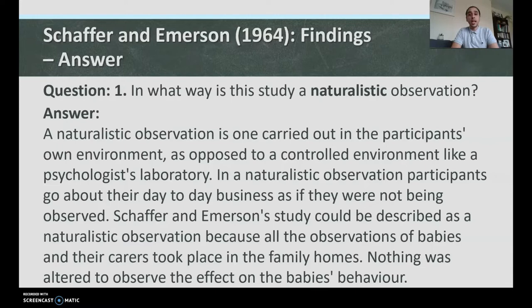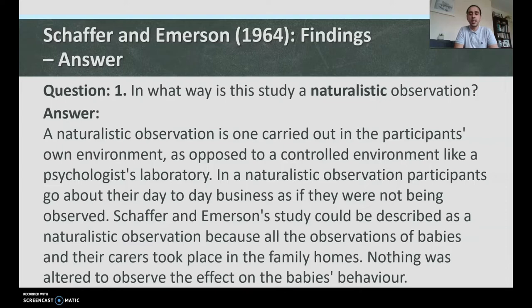It occurred in the natural setting where the behavior usually happens. If I wanted to observe the relationship between teachers and students and carried it out in a lab, I might not get genuine behavior — people change in unfamiliar settings. In a naturalistic observation, studying behavior where it usually occurs means you're likely to get normal, valid data with very few demand characteristics.